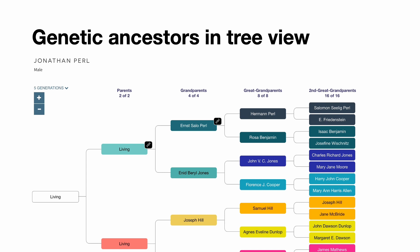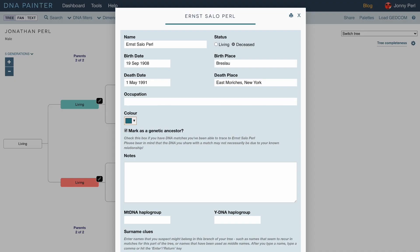This is what genetic ancestors look like in tree view, and if you make a mistake you can very easily hover and unmark someone as a genetic ancestor. You can also access the 'mark as a genetic ancestor' checkbox within the edit form.